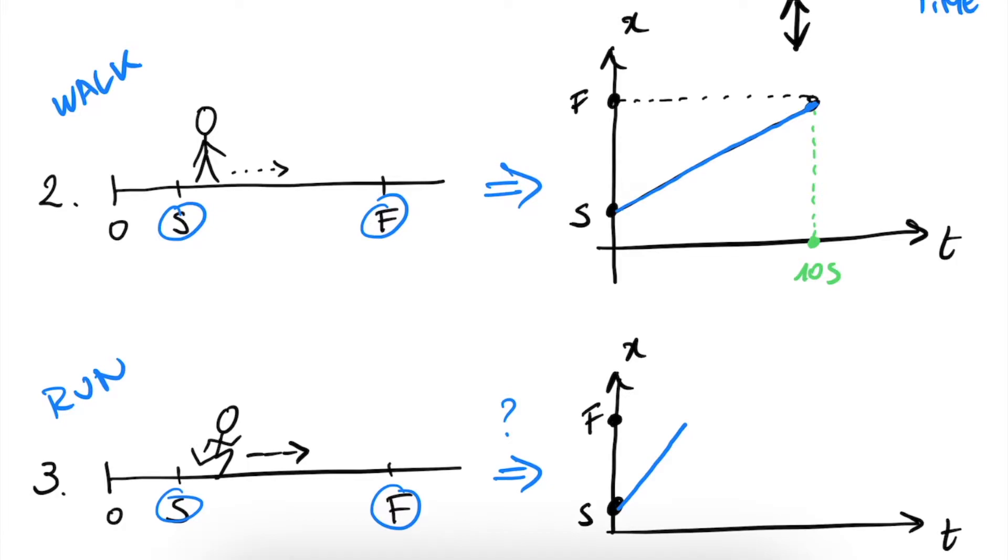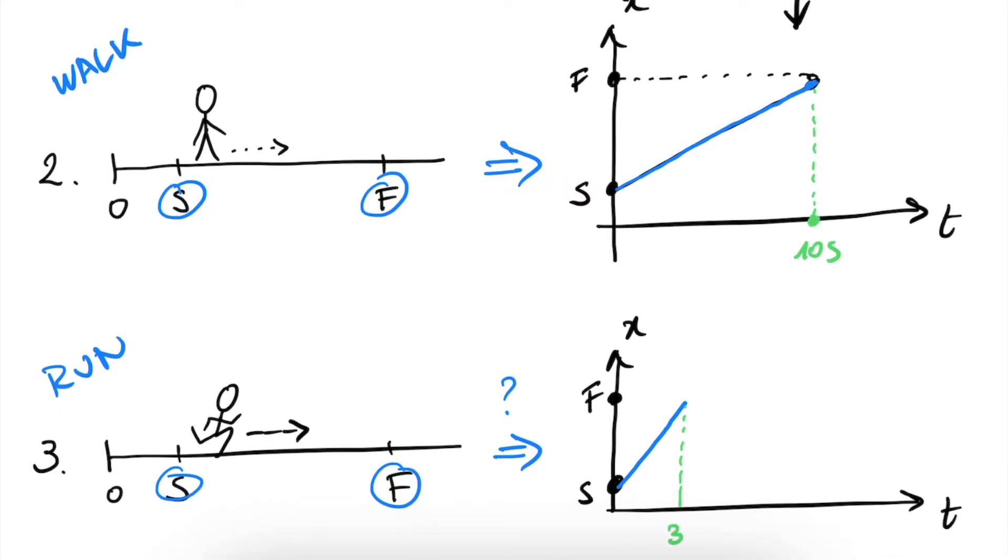And this is represented by our graph being much steeper. Let's say we do it in three seconds because we run on average three times as fast as we walk. So then again we see that we arrive at F, but we arrive at F in a much shorter time, which is designated by here, this interval on the T axis is much shorter. And this translates in our graph, our actual line on the XT diagram, to be much steeper because we get from S to F in a much smaller time.